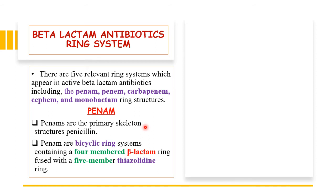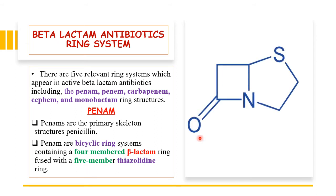The first is the penam ring nucleus. Penam is the primary skeleton present in penicillin antibiotics. Penam is a bicyclic ring, meaning it contains two cyclic rings: a four-membered beta-lactam ring directly fused with a five-membered thiazolidine ring. So the beta-lactam ring and the thiazolidine ring are fused together to form the penam structure.